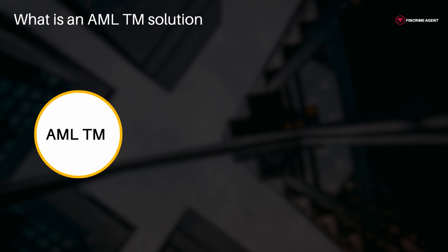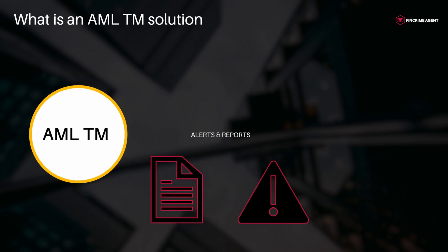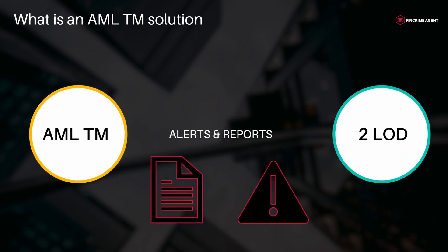Those solutions are able to check all sorts of activities, including cash deposits, withdrawals, company payments, or individual bank transfers. At the back of those monitoring activities, AML-TM solutions are able to generate reports and alerts to the anti-money laundering second line of defence function, in charge of detecting suspicious activities.